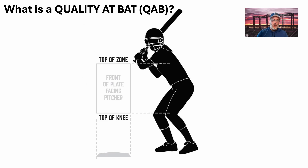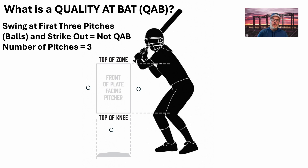Here's another scenario: what is a quality at bat? The first pitch is outside, the second pitch is inside, the third pitch is low. However, you swung at all three of those pitches, and all three of those pitches were not in the strike zone — they would have been balls — but you swung at them, you missed them.